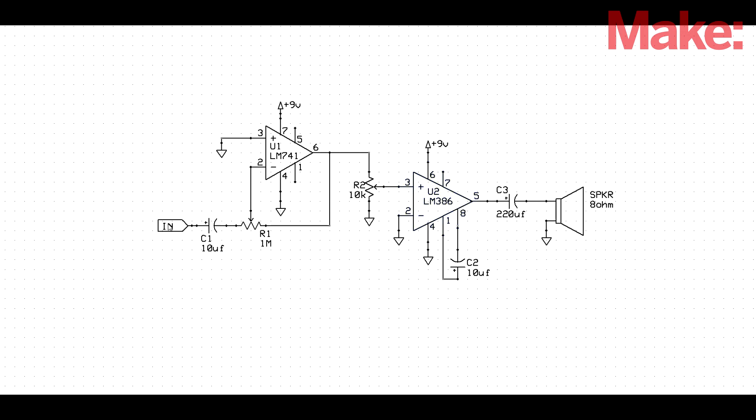At the beginning of the circuit, for the input, we have C1. This is a decoupling capacitor. This keeps DC and some of the lower end frequencies, lower than probably 40-50 Hz, out of the circuit.